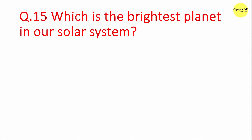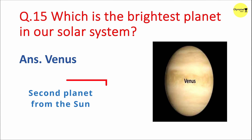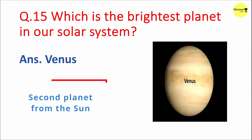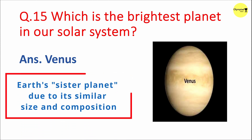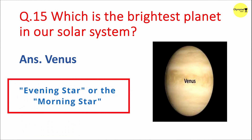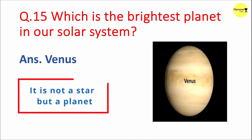Question 15: Which is the brightest planet in our solar system? Answer: Venus. Venus is the second planet from the sun and is often referred to as Earth's sister planet due to its similar size and composition. Venus is often referred to as the evening star or the morning star because it is very bright and can be seen in the evening or early morning.